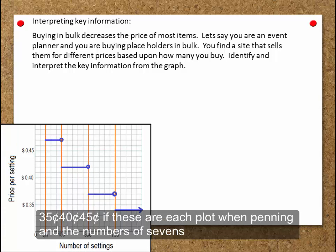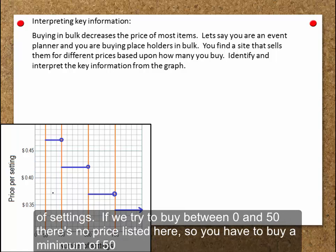We have the price per setting. So 35 cents, 40 cents, 45 cents. So these are each one penny. And then the numbers of settings. If we try to buy between 0 and 50 there's no price listed here, so you have to buy a minimum of 50.